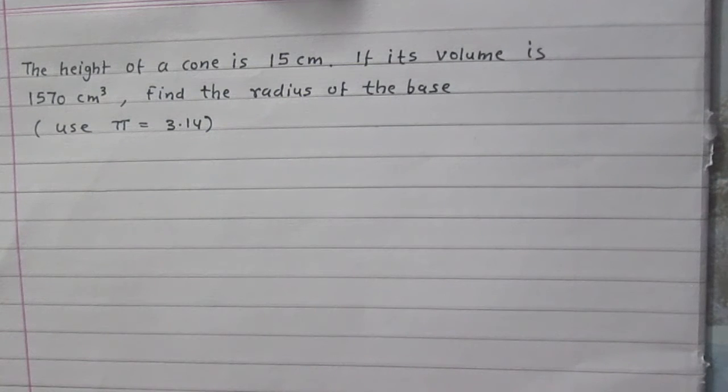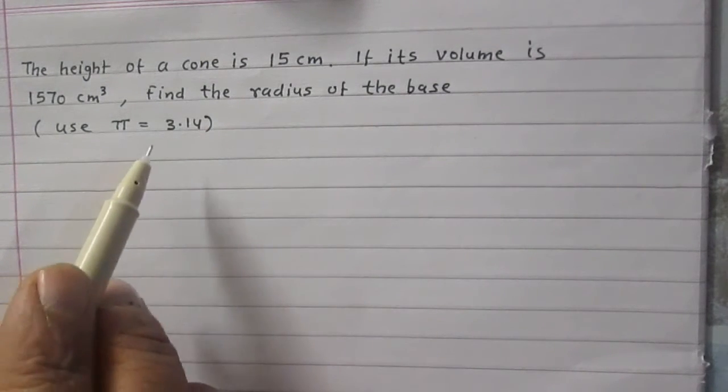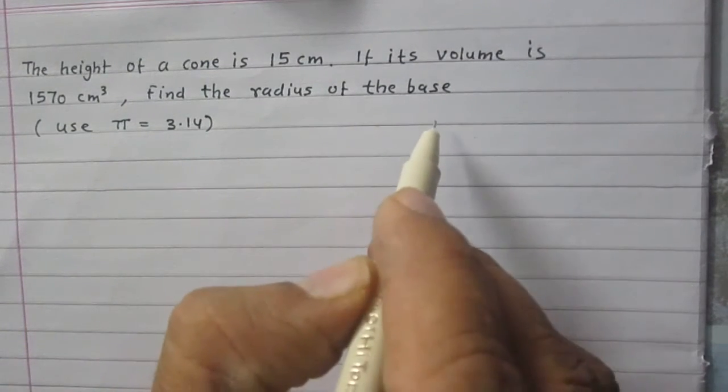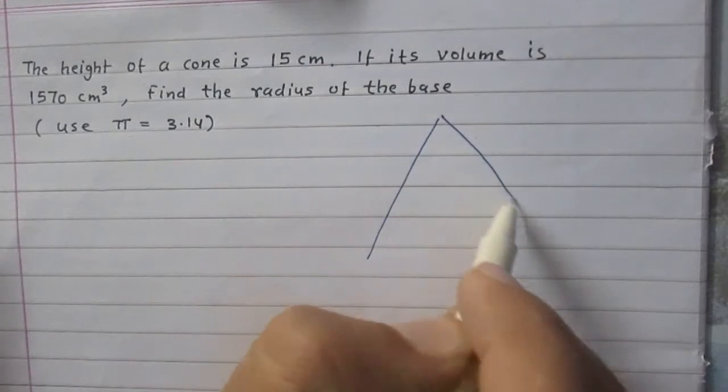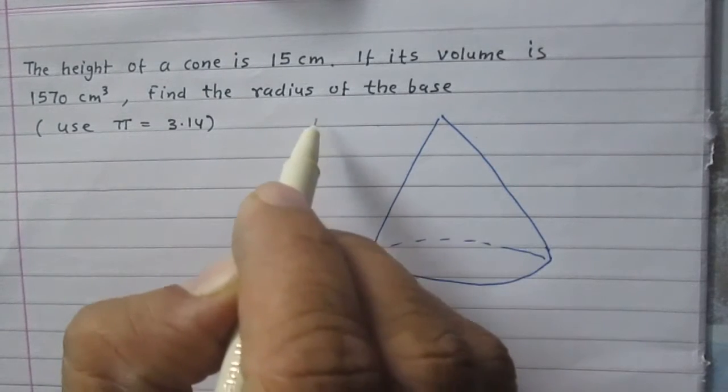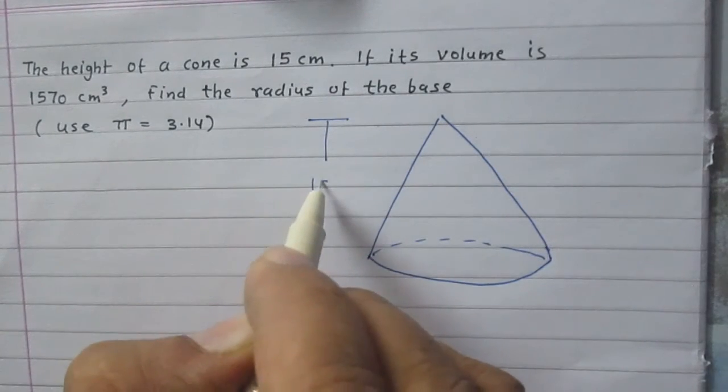The height of a cone is 15 centimeters. If its volume is 1570 cubic centimeters, find the radius of the base. Use π = 3.14. We are given a right circular cone and its height is 15 centimeters.